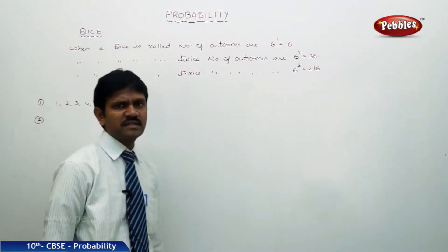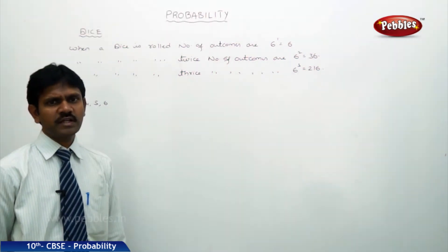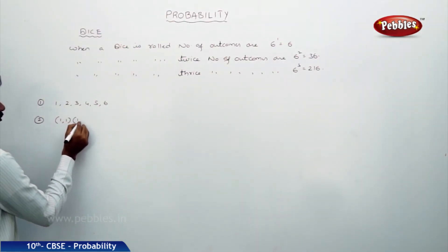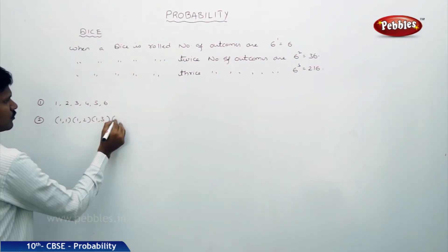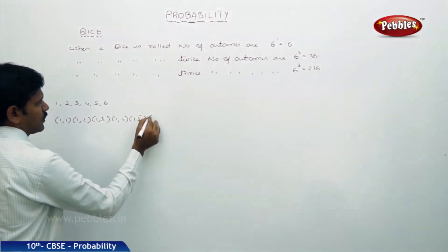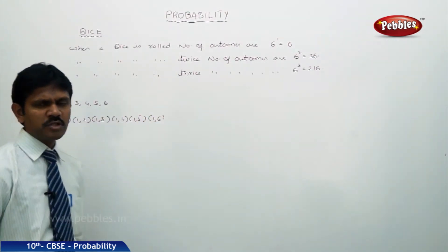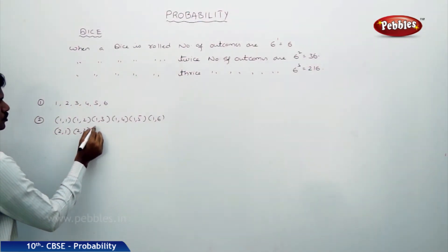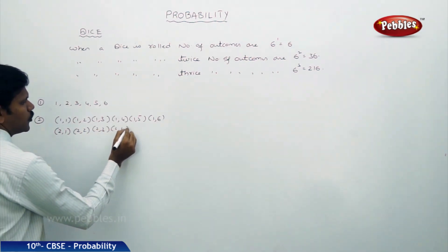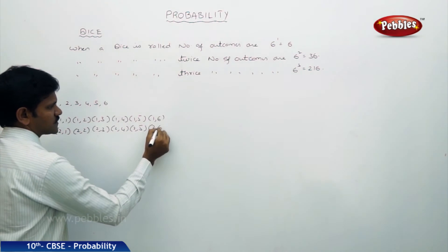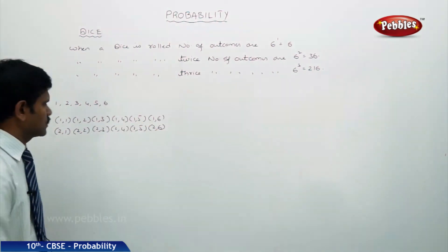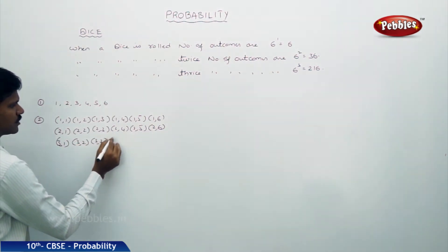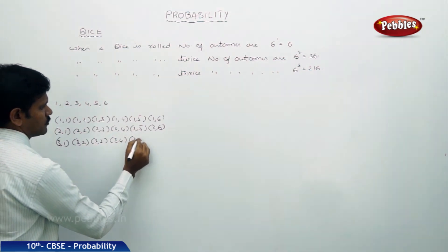When the dice is rolled twice, or two dice are rolled at a time, outcomes are 36: (1,1), (1,2), (1,3), (1,4), (1,5), (1,6) with the first die showing 1. Next, (2,1), (2,2), (2,3), (2,4), (2,5), (2,6). Next, (3,1), (3,2), (3,3), (3,4), (3,5), (3,6).